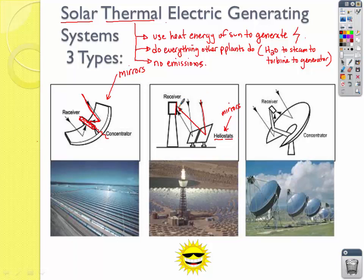In that tower is where we're going to run a pipe with cold water, and once it gets to the top of the tower, that water will heat up and turn to steam, which is then hooked up to a turbine and a generator to generate electricity. So here we're focusing the sun's energy to a receiver, where it transfers that heat to water. In the third model, we use a dish-style reflector to reflect energy to a receiver, which collects it and transports it nearby to boil water and generate steam for electricity.